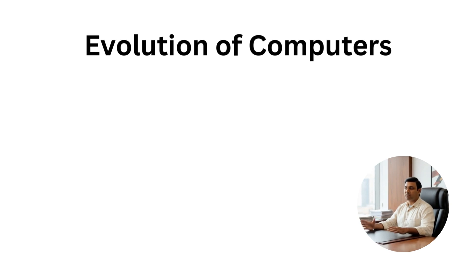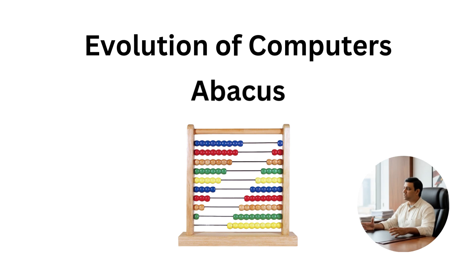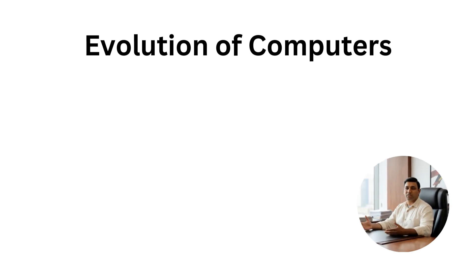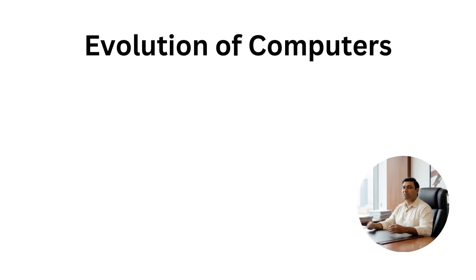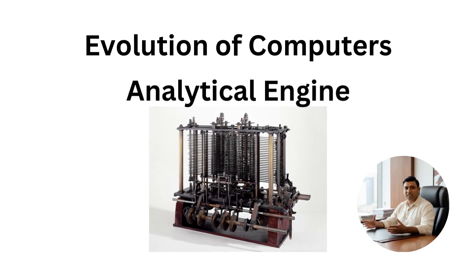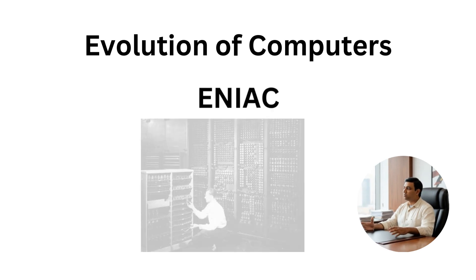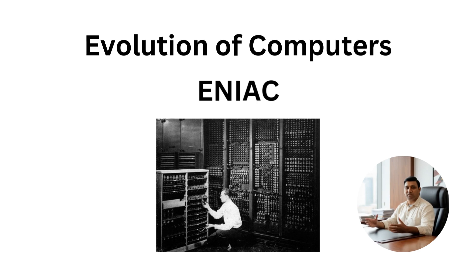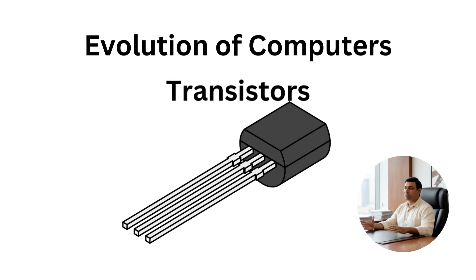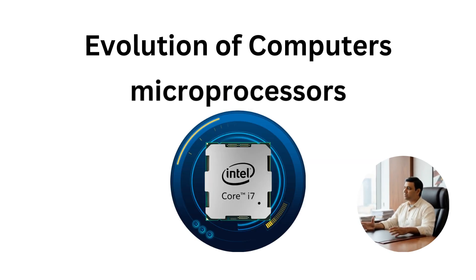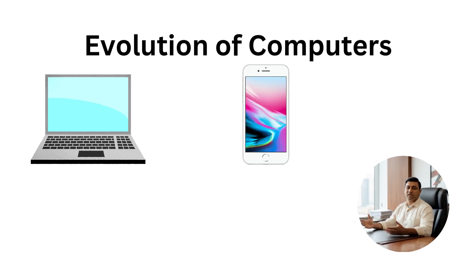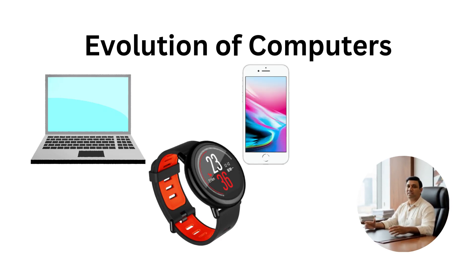Evolution of computers. Computers didn't appear overnight — they evolved over centuries. It started with the Abacus in 500 BC for basic calculations. Then Blaise Pascal's Pascaline in the 1600s could add and subtract. Charles Babbage's analytical engine in 1834 laid the foundation of modern computers. In the 1940s, ENIAC introduced the stored program concept. Then came transistors in 1947, integrated circuits in the 1970s, and powerful microprocessors in the 1980s. Today we use laptops, smartphones, smartwatches, and even IoT devices powered by artificial intelligence.